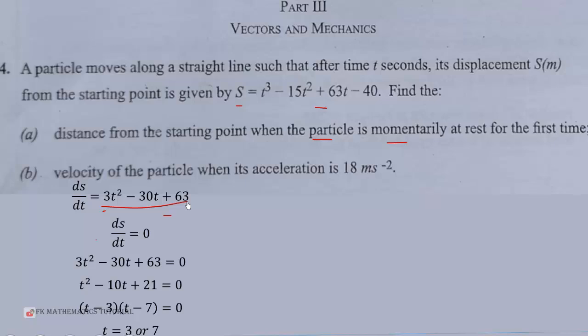So, what do we do next? We set for the first time. For the first time. The particle is at rest for the first time. The distance from the starting point. So, for the first time, t will be equal to 3 seconds.